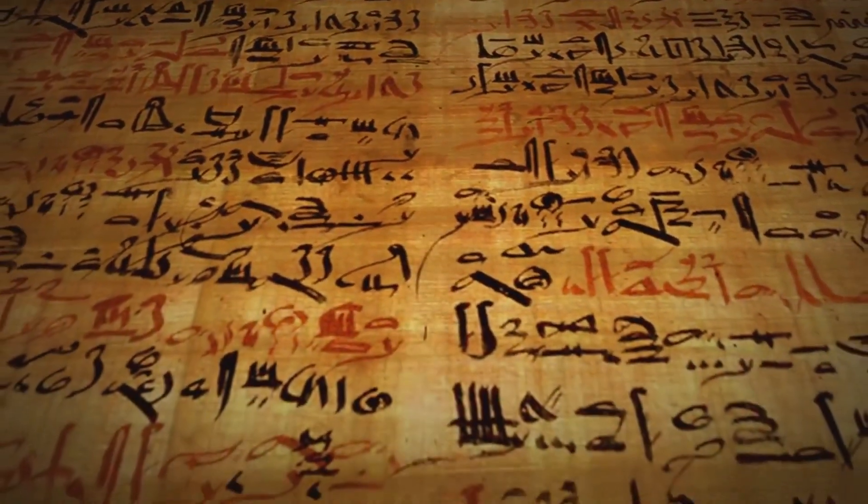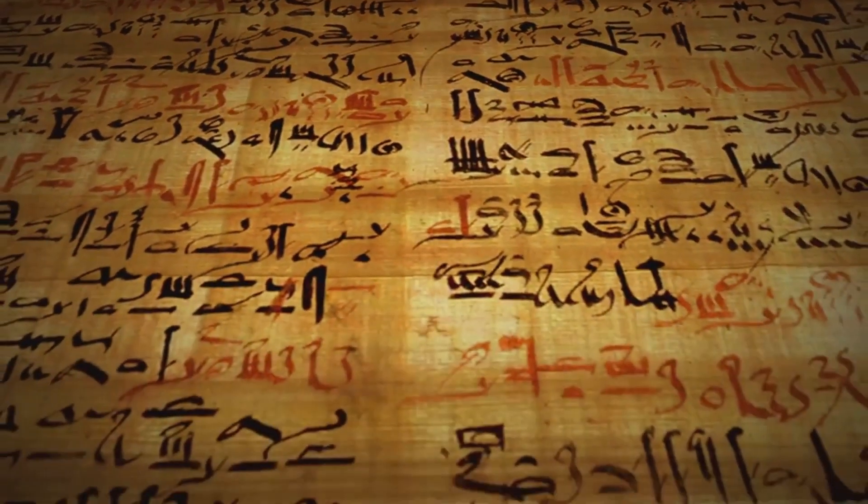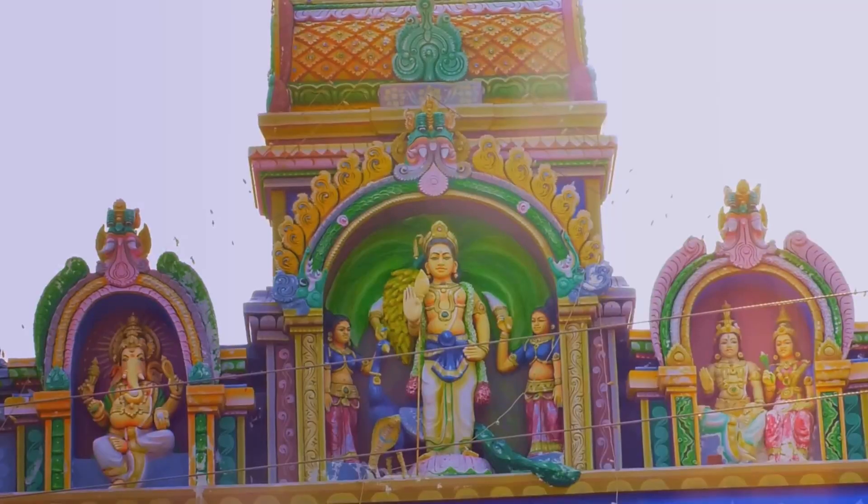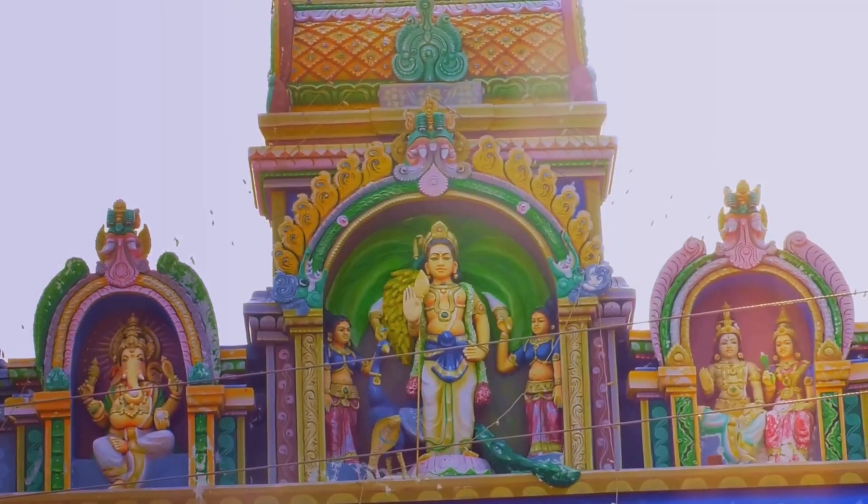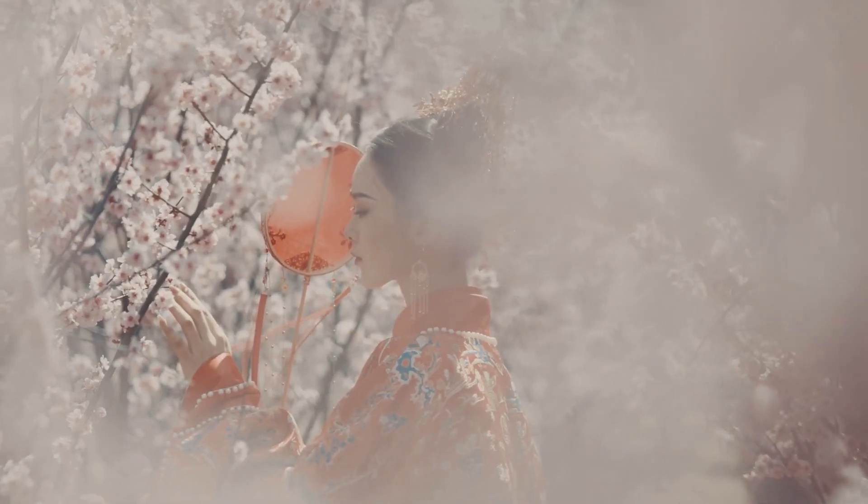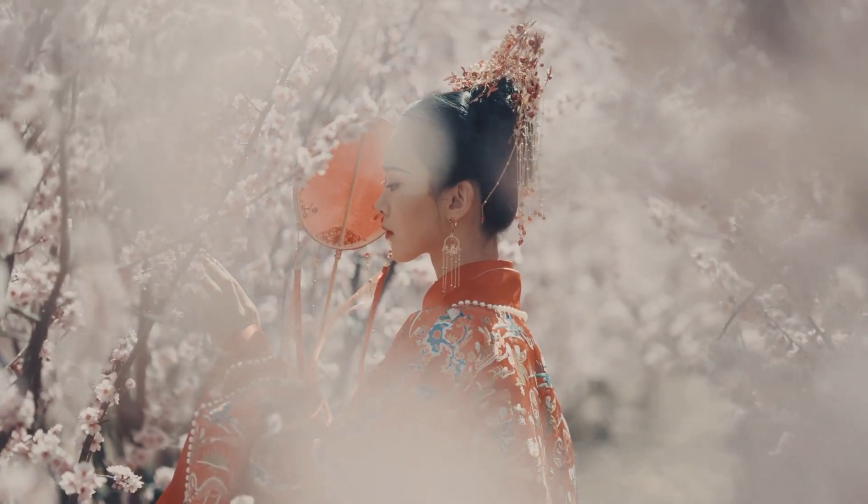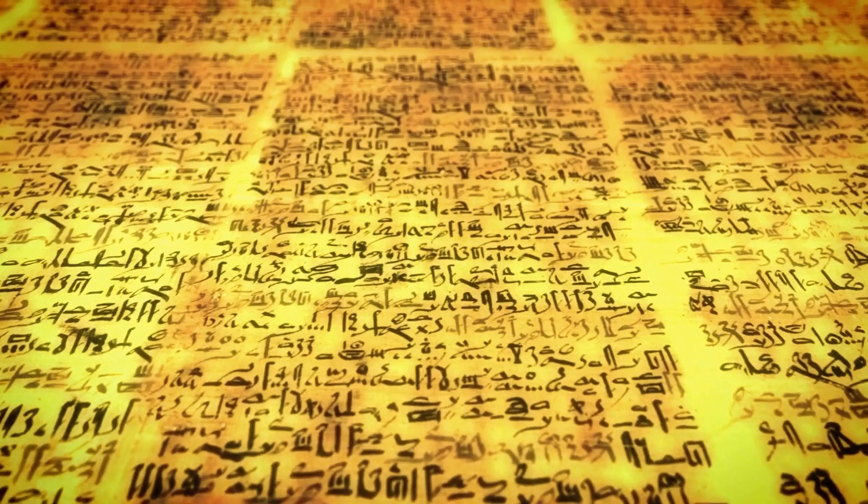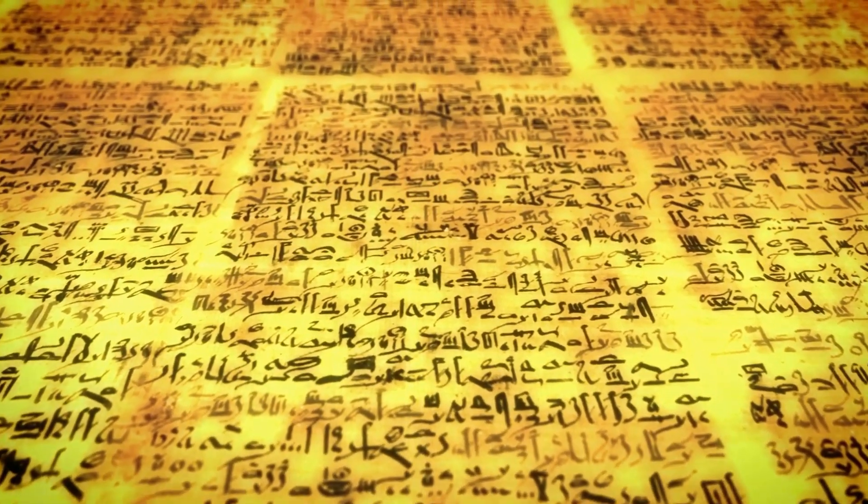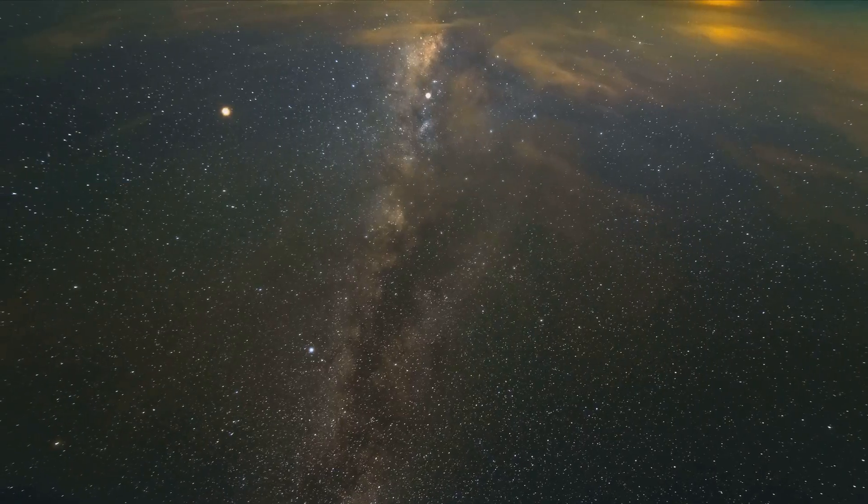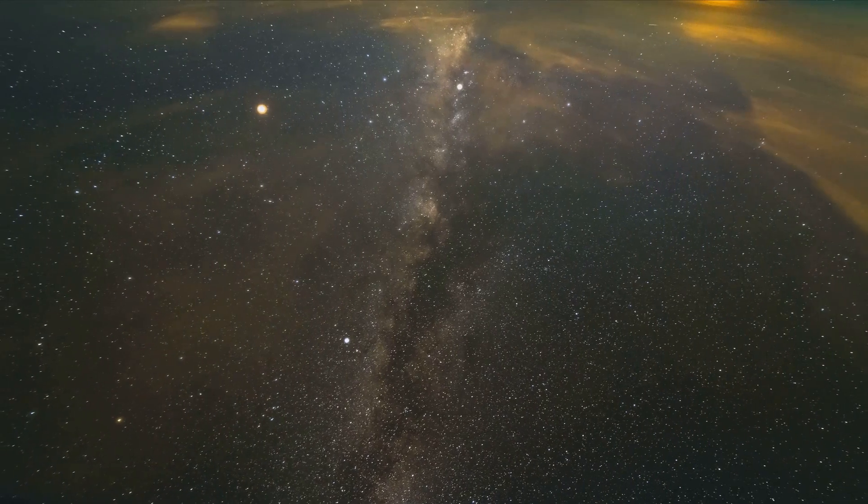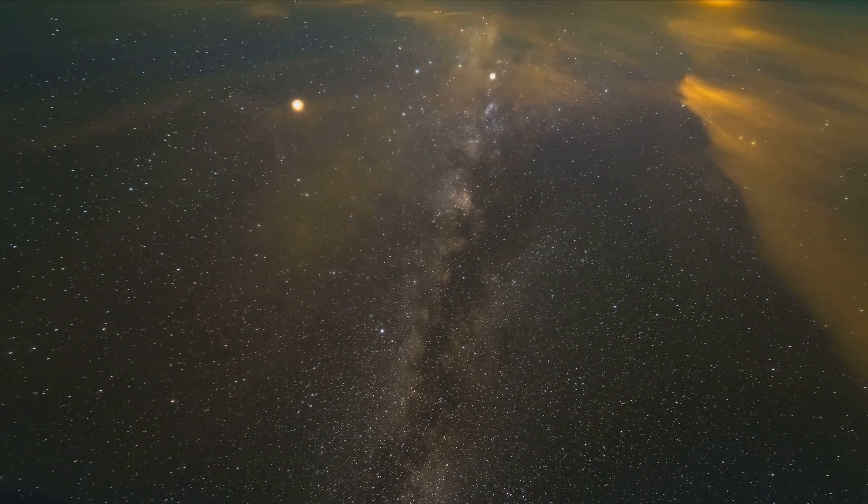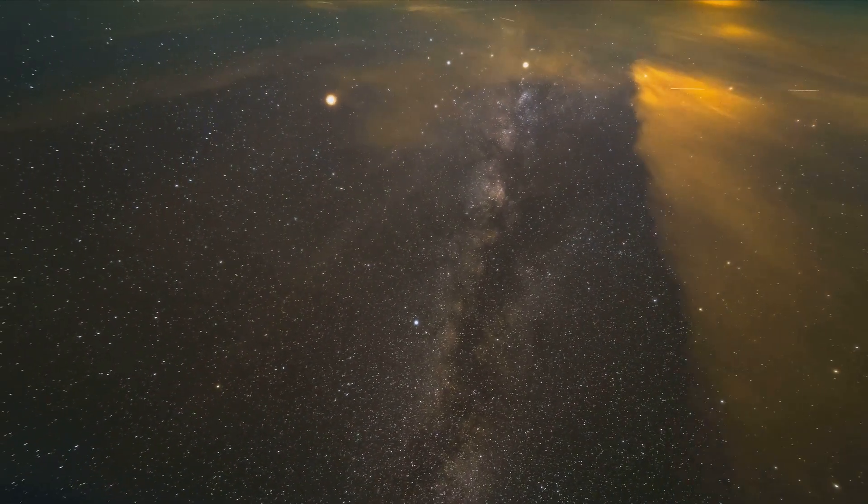Across cultures, ancient wisdom has hinted at unseen forces. In Hindu cosmology, Maya describes reality as an illusion. In Chinese philosophy, Wu Wei reflects the invisible flow of existence. Could these ideas have been ancient attempts to describe what we now call the anomalies of physics? Perhaps the universe is not a rigid machine, but a living system, constantly evolving, recalibrating and surprising us.